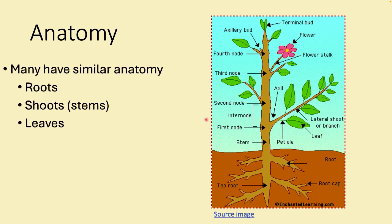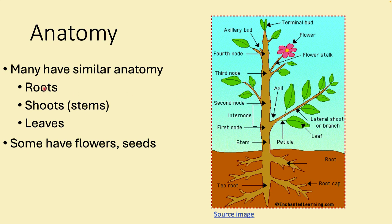Plants can be divided into roots, shoots, and leaves. For flowering plants, we also look at flowers and seeds. We'll now walk through roots, shoots, leaves, flowers, and seeds.